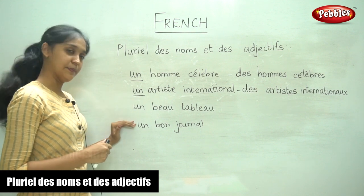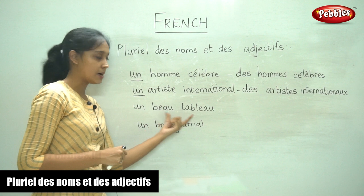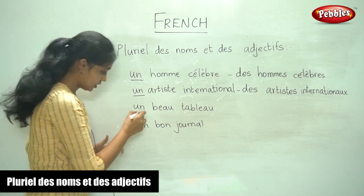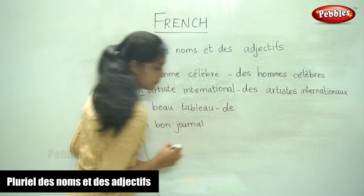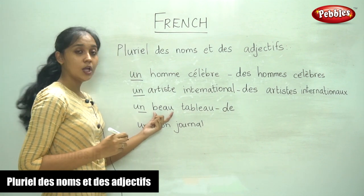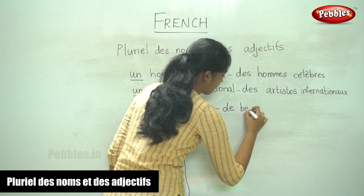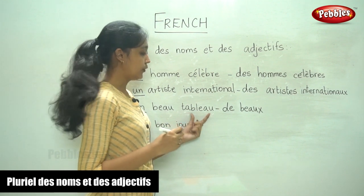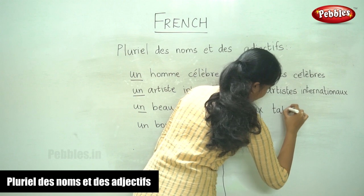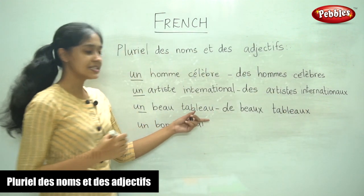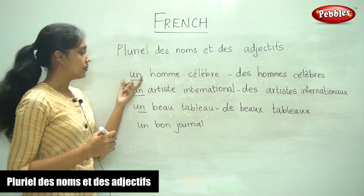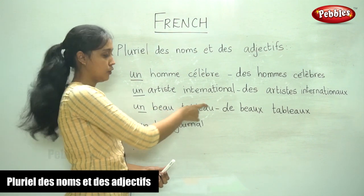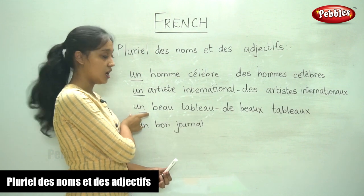In the next two examples, the adjective comes first followed by the noun. In that case, 'un' becomes 'de'. So the plural for 'beau' is 'beaux', and for 'tableau' the plural is 'tableaux'. Every word is made into the plural form, but since the adjective comes first followed by the noun, we replace 'un' with 'de'.